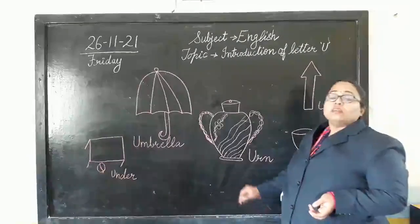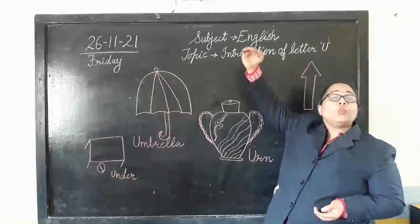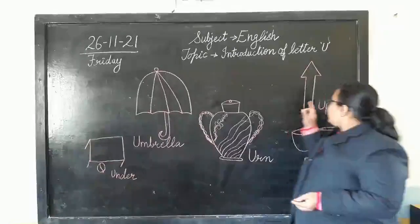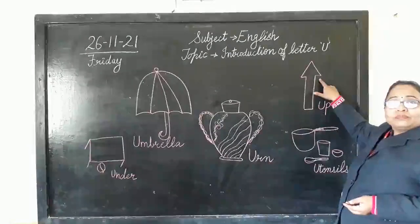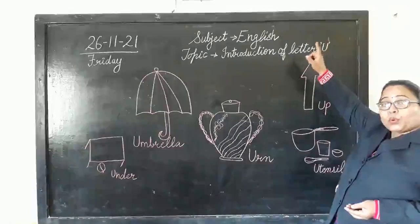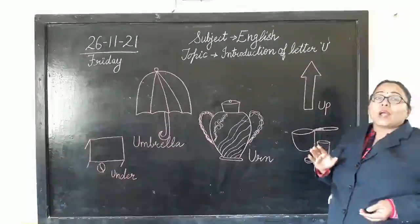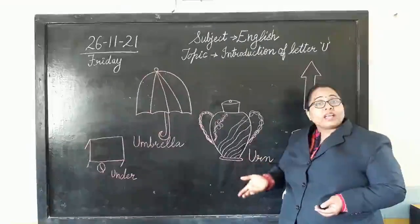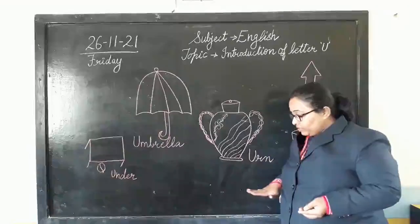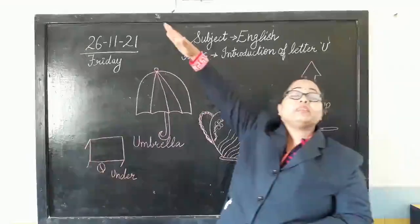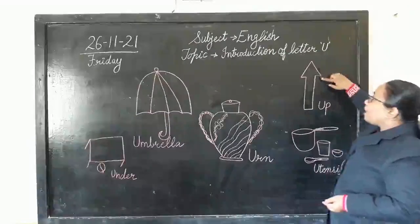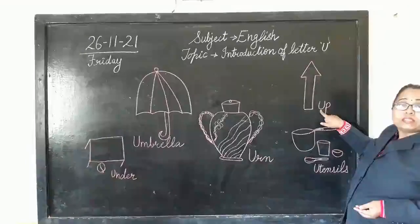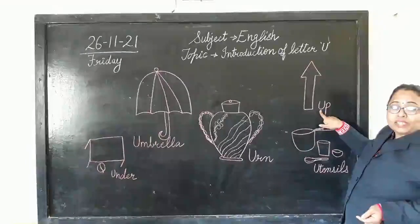In Hindi we have learned 'upar.' U says 'upar.' What is 'up' in English? When something is going up — like a rocket, like a kite, like an aeroplane — they start and go up into the sky. So that direction is called up. Again, it begins with letter U.